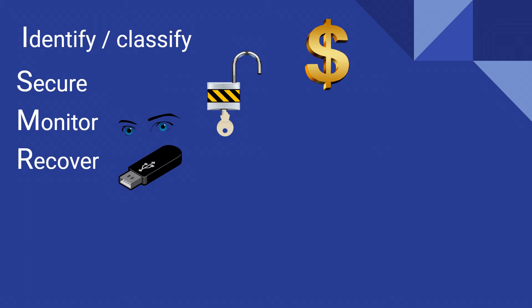The next step, if the asset value changes, is to recover that asset value — so you'll need the ability to recover from any changes. This could be in the form of backup, redundancy, or restoration activities, which is why I've got this USB stick here.